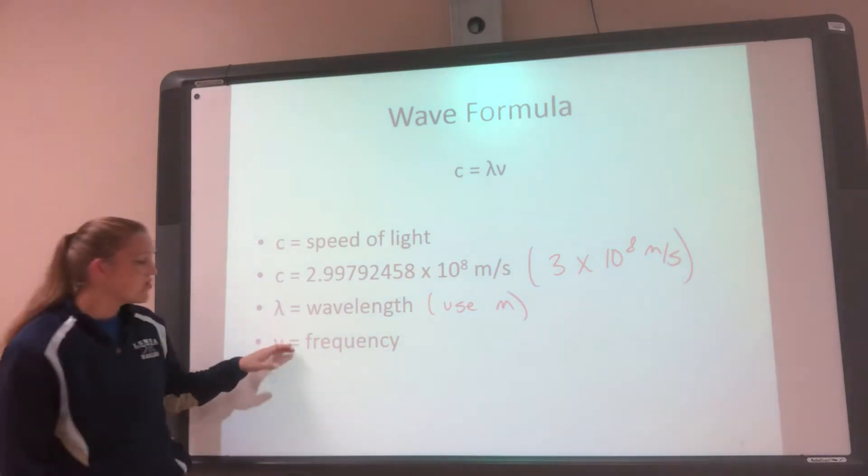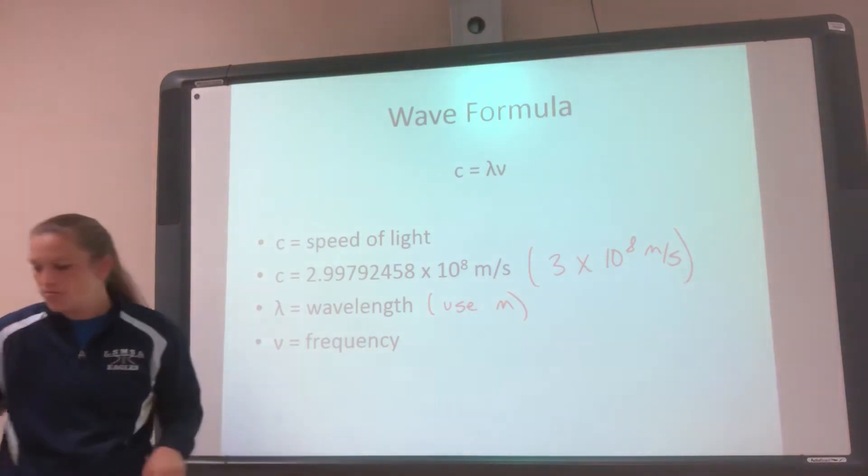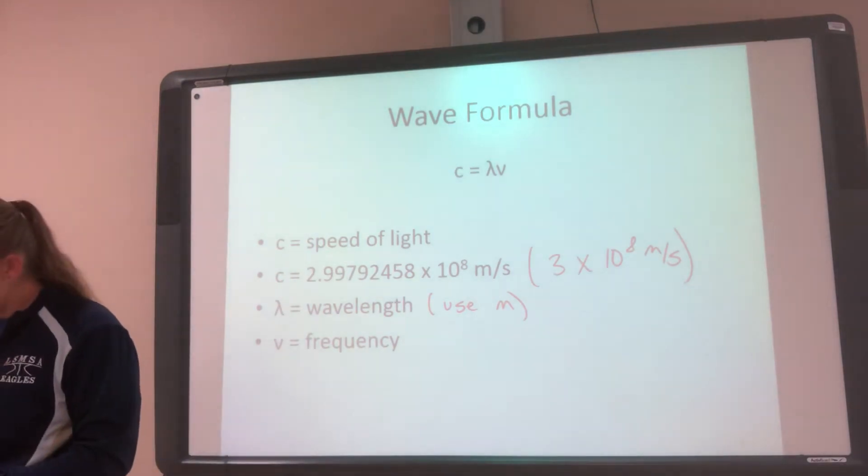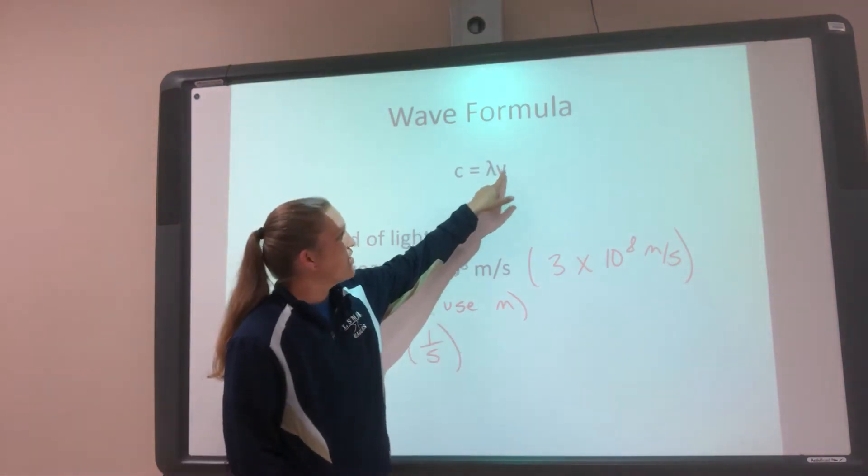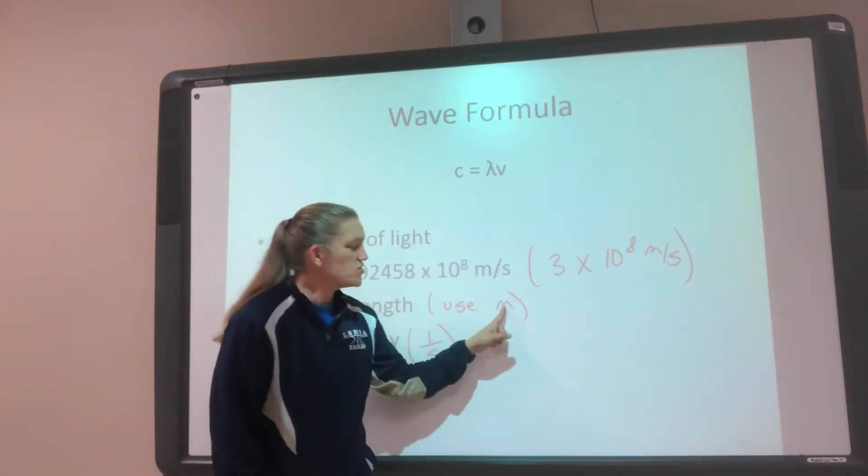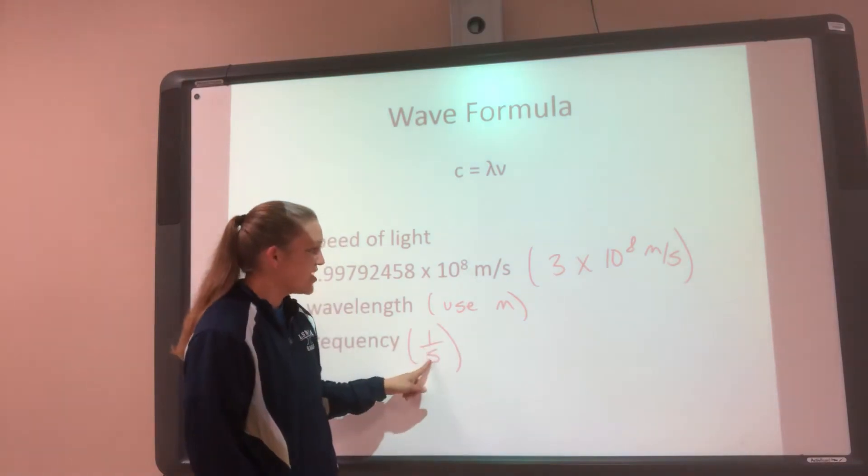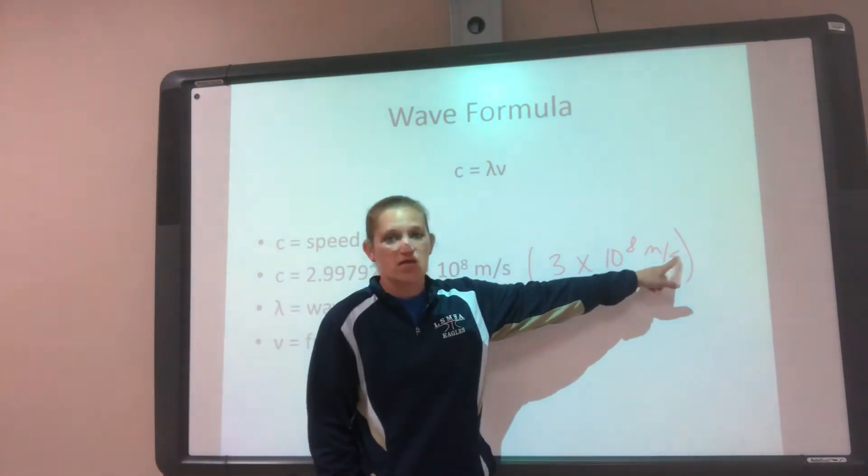And frequency is always the same units. So remember, frequency is 1 over a second. So what you notice is if I multiply my wavelength by my frequency, I multiply meters by 1 over a second, that's how I get meters over a second.